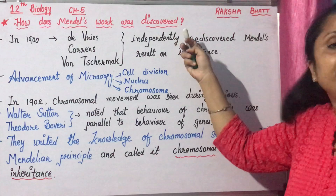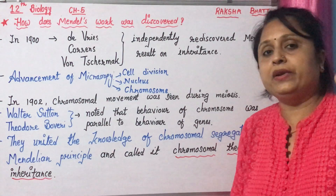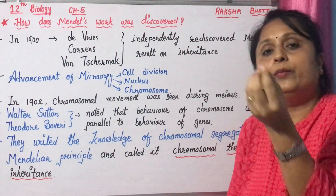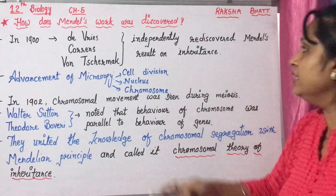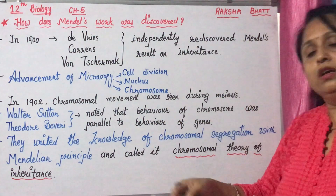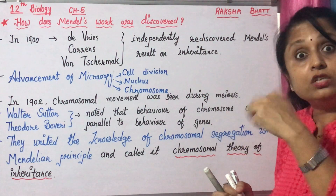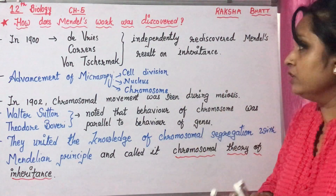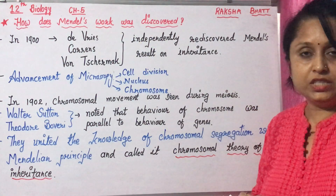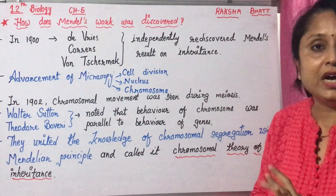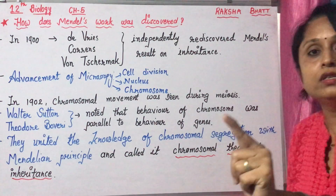These three scientists independently rediscovered Mendel's results on inheritance. Whatever experiments Mendel had performed — such as the monohybrid experiment and the dihybrid experiment — the same experiments were performed by these three scientists independently. The results were similar: Mendel's monohybrid result gave a phenotypic ratio of 3:1, and the dihybrid result gave a ratio of 9:3:3:1.